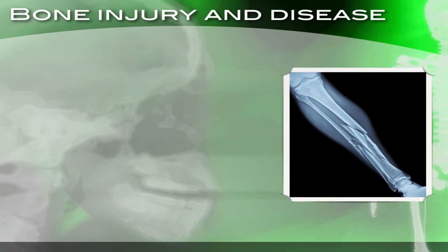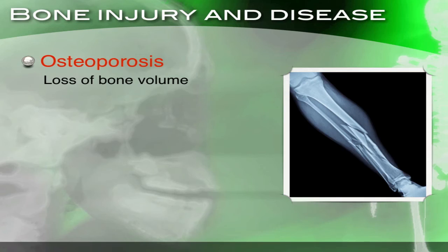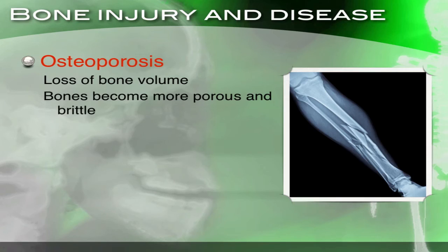Now let's talk about bone injury and disease. Osteoporosis is when we have a loss of bone volume. The bones become more porous and brittle, making them easier to break. You'd hear about older people who have osteoporosis and broke a bone just from falling, because it becomes easier to break.